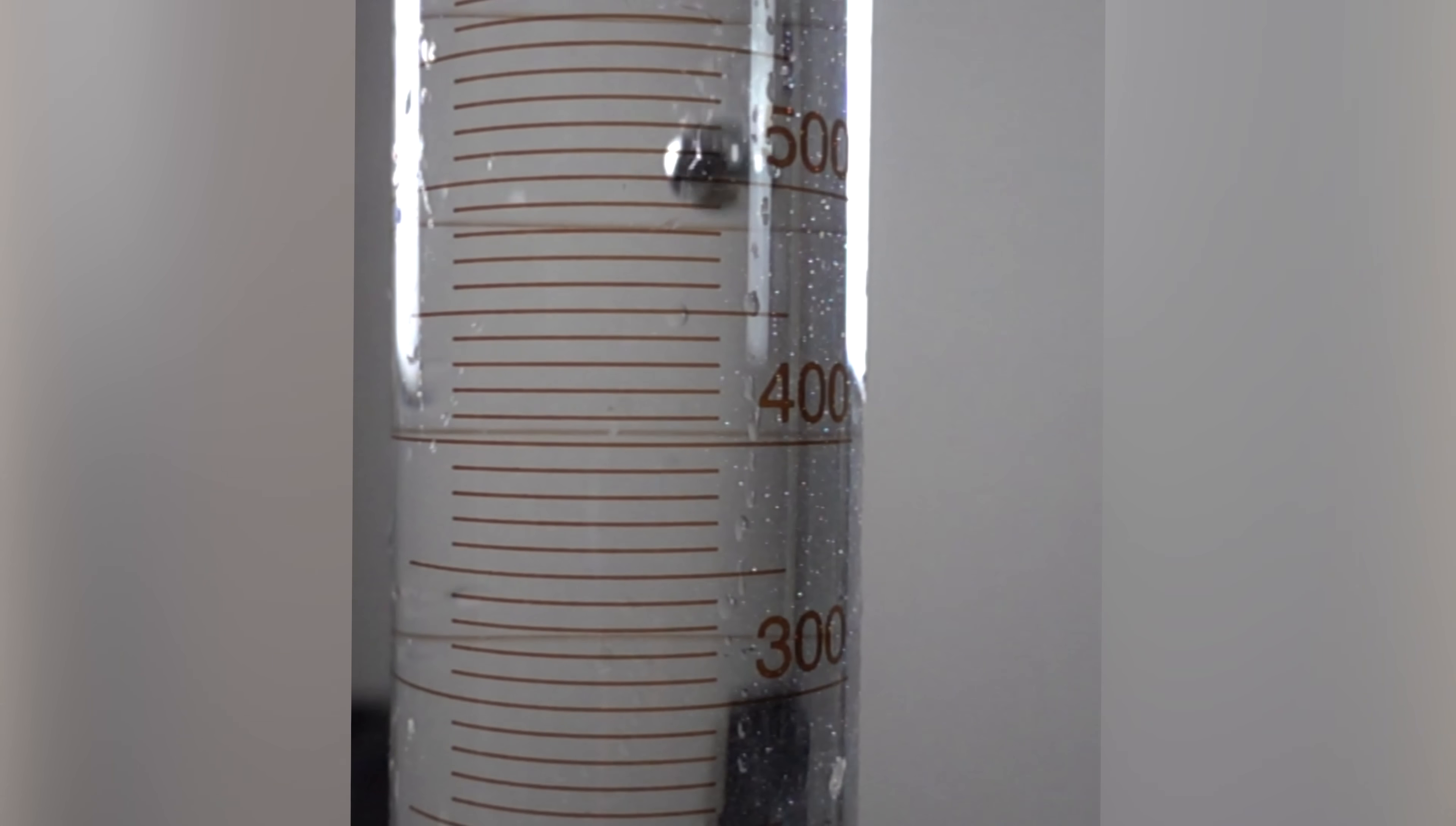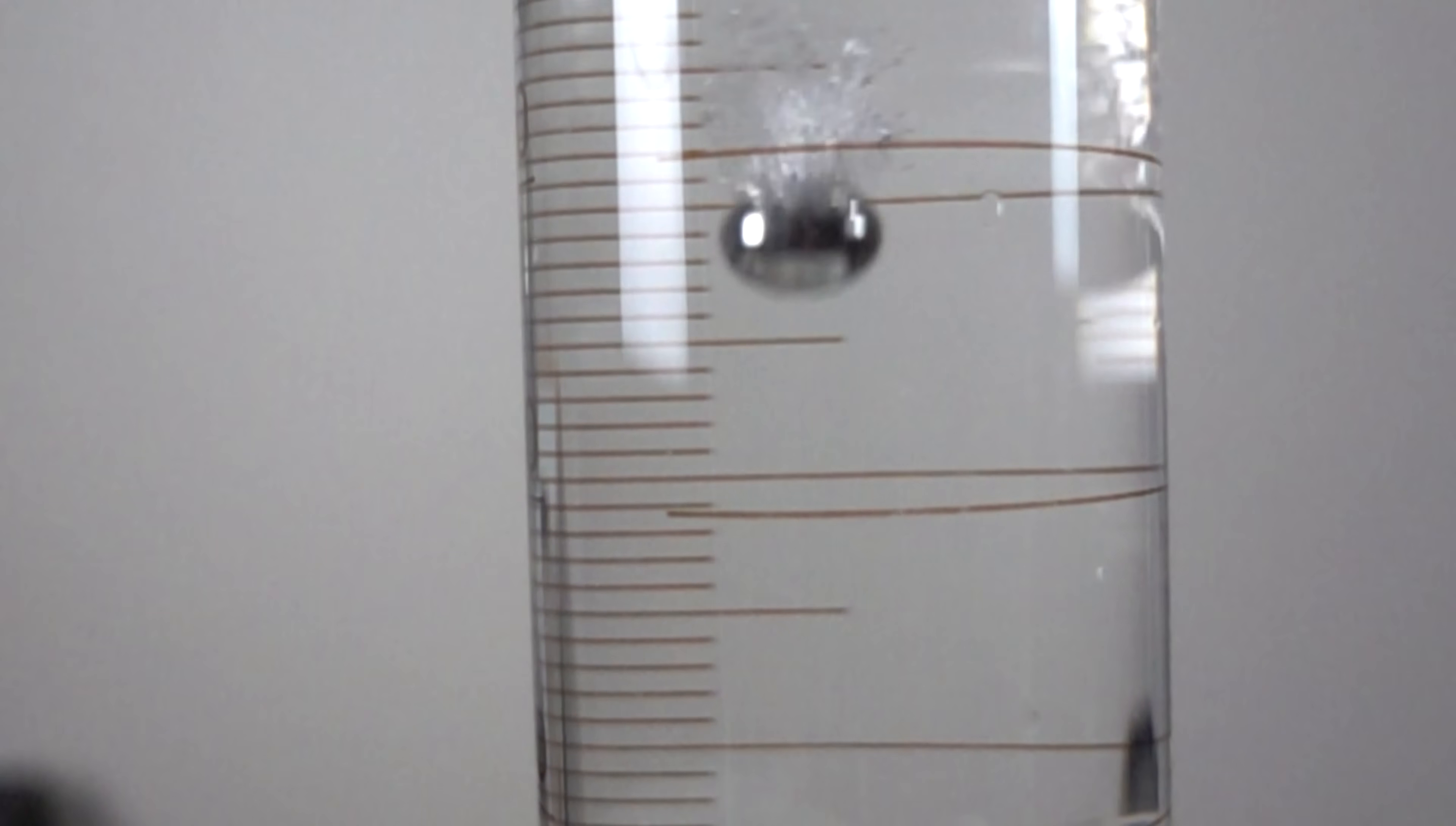But if you take a normal sphere and drop it in water, you'll see that it doesn't entrain any air behind it. And so you don't get a projectile that looks like a torpedo or anything, you just get a ball falling through water with a little tiny bit of air bubbles around it.